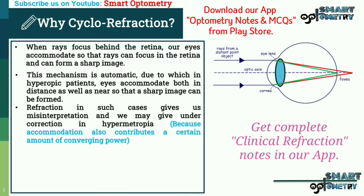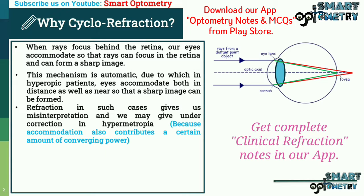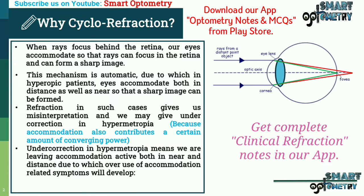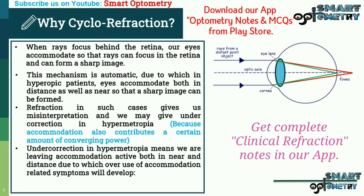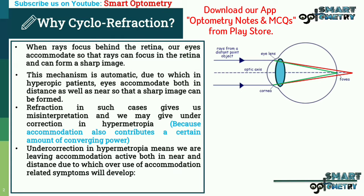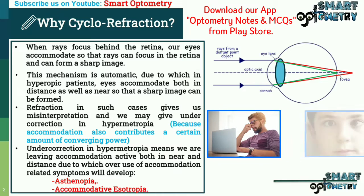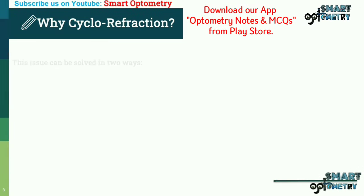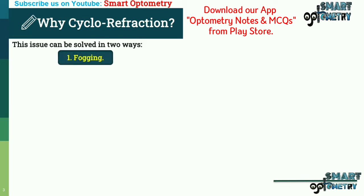Refraction in such cases gives us misinterpretation and we may give undercorrection in hypermetropia, because accommodation also contributes a certain amount of converging power. Undercorrection in hypermetropia means we are leaving accommodation active both at near and distance, due to which overuse of accommodation-related symptoms will develop, like asthenopia and accommodative esotropia.